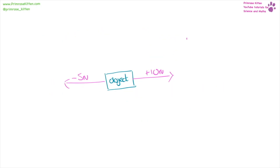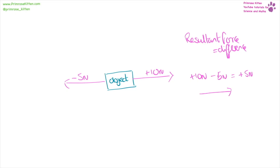If we're looking for the resultant force, we need to find the difference between them. For example, here we have 10 plus 10 newtons minus 5 newtons, which is going to give us plus 5 newtons in that direction. For the second one, we have plus 2 newtons minus plus 2 newtons, giving us 0 newtons as overall resultant force, so there is going to be no movement.